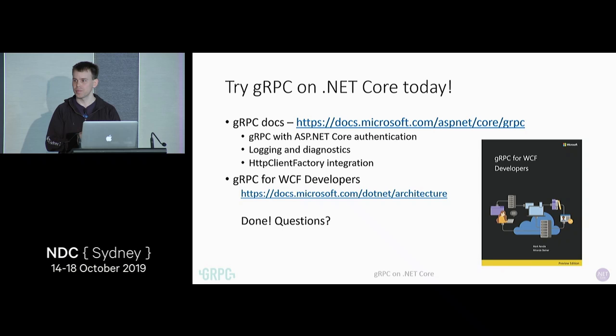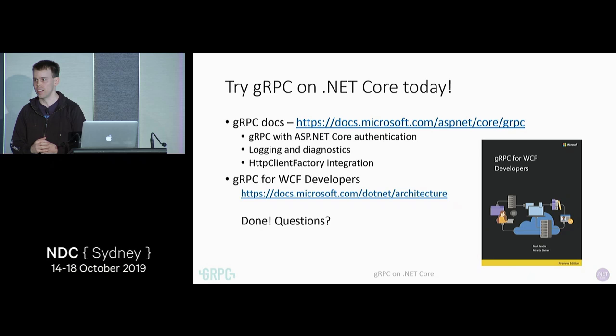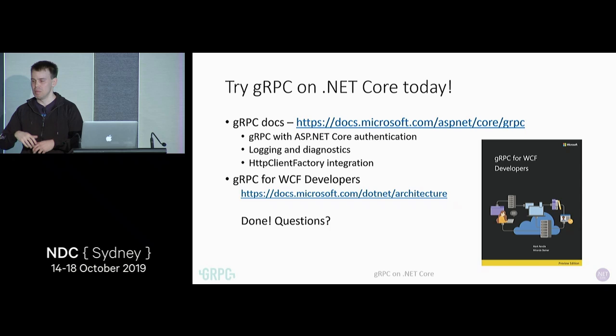On authentication: you can pretty much use all the authentication that's available in ASP.NET Core. One that you can't use is Windows authentication — Windows authentication doesn't work in HTTP/2. But securing a gRPC service shouldn't be much different from securing an MVC controller. You can just put an Authorize attribute on it, put in the necessary middleware and configuration, and that middleware will automatically run when the request comes in. If you get a rejection, it will return an unauthorized response back to the client.